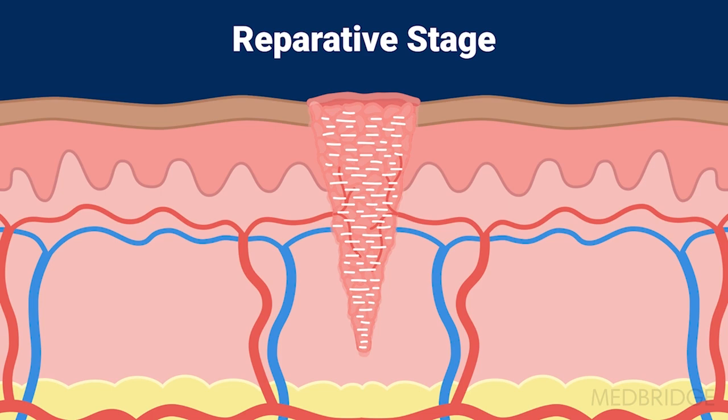Injuries closed by suture are referred to as primary closure, and that follows a predictable path of healing through the inflammatory, proliferative, and remodeling stages. Leaving a wound open is referred to as secondary healing, where epithelialization occurs from the wound margins, the wound contracts, and the normal rate is about 15% healing per week.